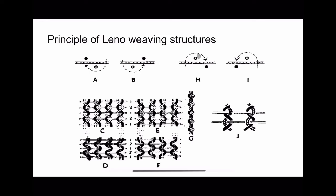But if the standard yarn forms the top shed and the crossing yarn forms the bottom shed, in that scenario also the crossing yarn crosses the standard yarn. As we can see, the crossing yarn is on the top shed and the standard yarn is on the right side but in the bottom shed. In the next pick, the crossing yarn crosses the standard yarn from above it and forms the bottom shed again, whereas the standard yarn is again on the top shed. So there are these two possibilities.